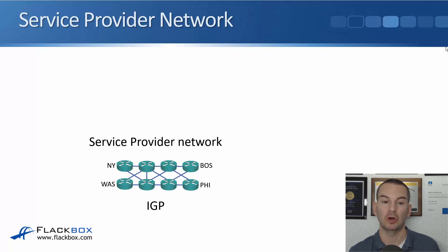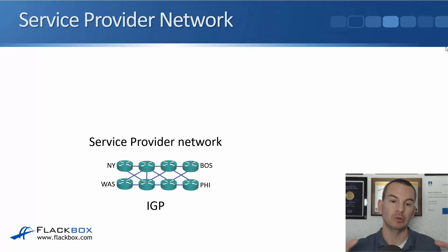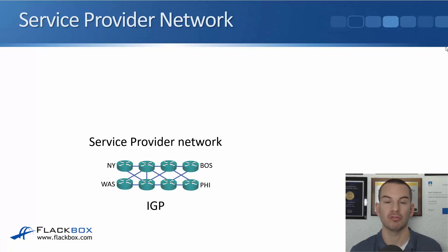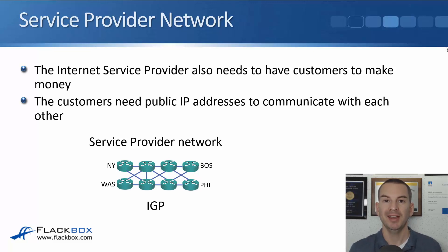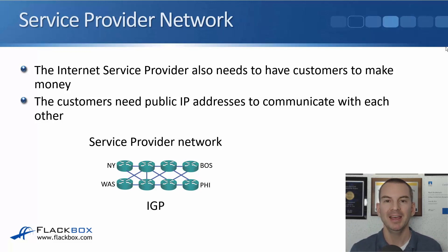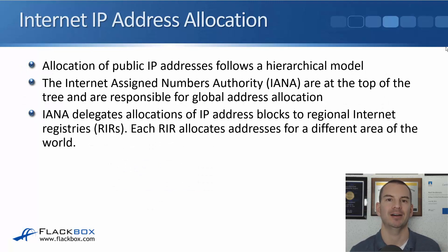That's going to happen in our service provider network as well. In the example here we've got New York at the top left, Washington below, Boston in the top right, and Philadelphia in the bottom right. In between those routers the service provider has got their core routers running an IGP — OSPF or ISIS — and all of those routers will learn the routes to everywhere else within that service provider. But the service provider also needs customers to make money, and those customers need public IP addresses to communicate with each other.